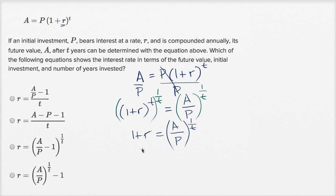Now pretty straightforward. You want to solve for R? Subtract one from both sides. We get R is equal to our future value divided by our initial investment to the one over t power minus one. And that is this choice right over there.